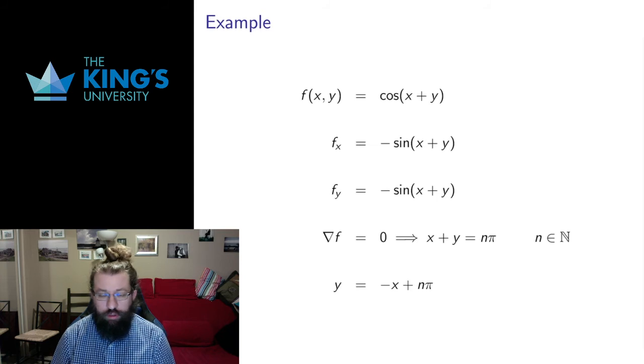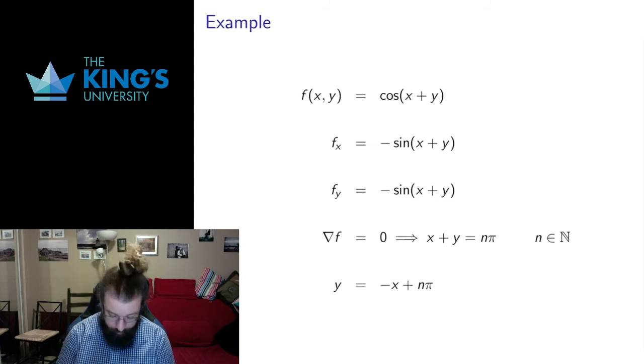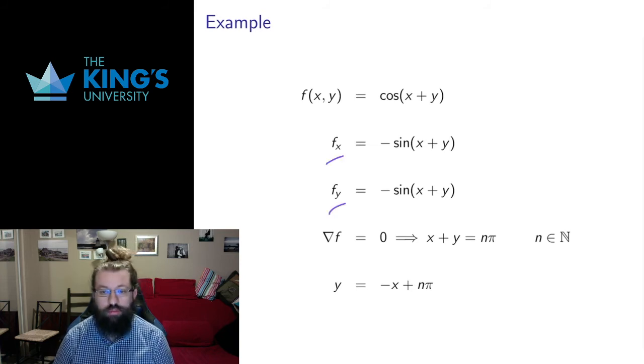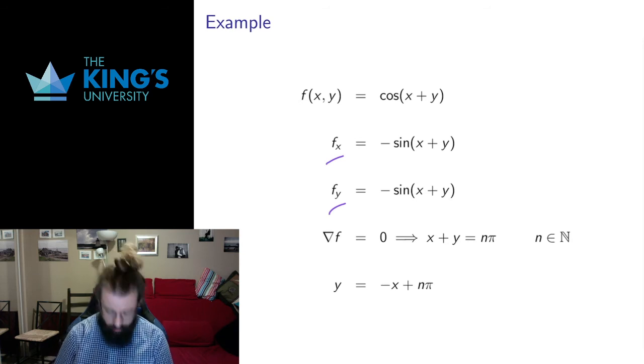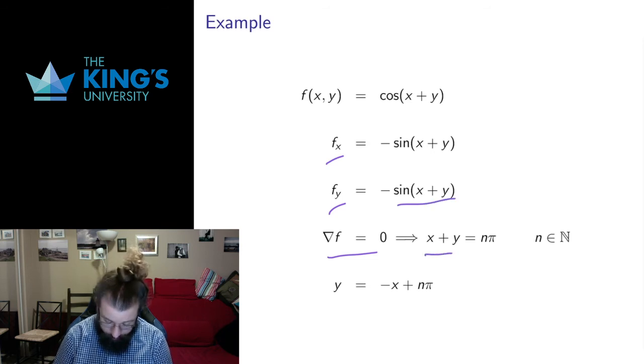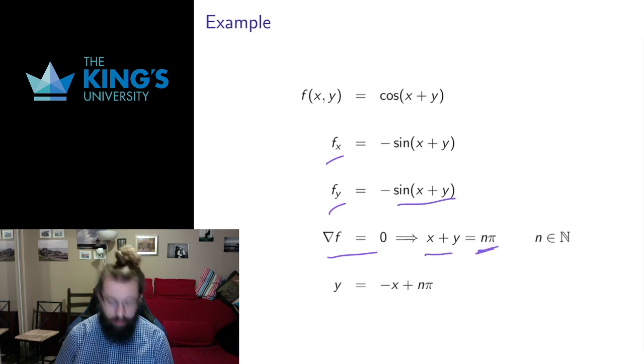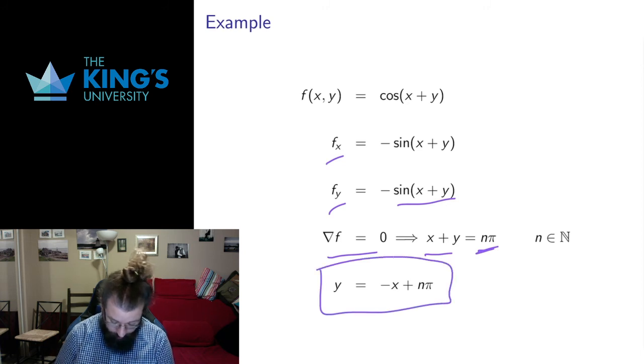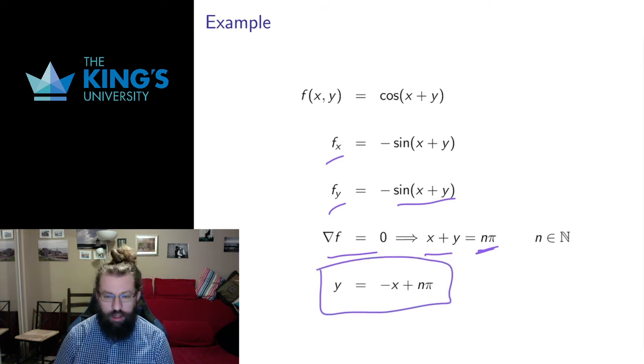Here's another scalar field, the cosine of x plus y. Take the partial with the chain rule, I get negative sine of x plus y, derivative of the inside is one, so that doesn't have any effect. This is equal to zero whenever sine of x plus y vanishes. Well, that happens when x plus y is any multiple of pi. If I solve for y, I get this. And this is a series of lines in R^2.